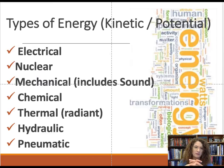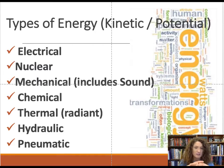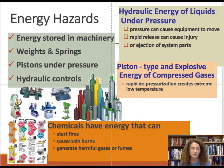The types of energy we're concerned about include electrical energy, hydraulic energy (fluid energy with a piston), and pneumatic energy (supplied air). We also consider chemical energy, thermal exposure from hot surfaces, mechanical energy including sounds and vibration, and nuclear energy. Energy sources stored inside machines — such as weights, springs, or pistons under pressure — must be released to prevent injury. Chemicals can start fires, cause skin burns, or release harmful gases.